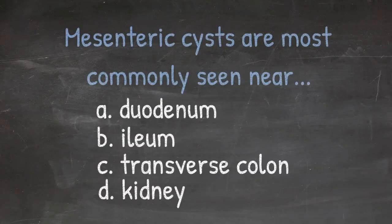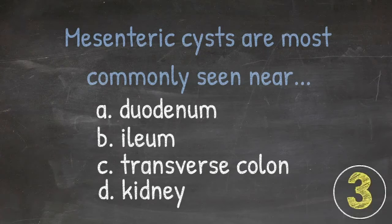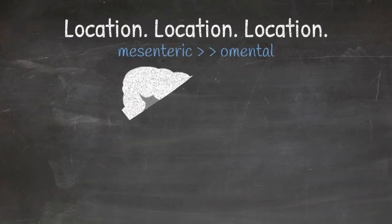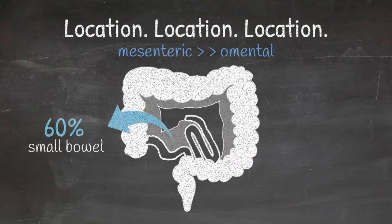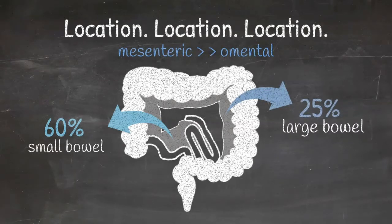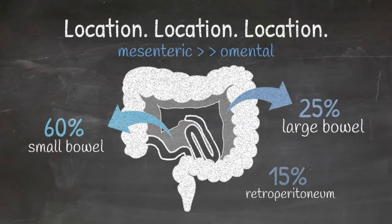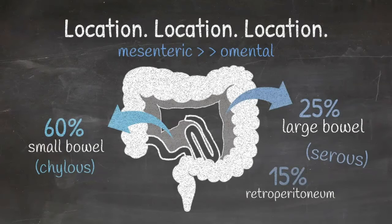Where will we find mesenteric and omental cysts? Mesenteric cysts are more common than omental cysts. About 60% of them are in the small bowel mesentery, about 25% are in the large bowel mesentery, and the remaining percentage are found in the retroperitoneum. The ones in the small bowel mesentery are more often chylous in nature, whereas the large bowel and retroperitoneal cysts may be more likely to be serous. You can have them anywhere from the duodenum all the way through to the rectum, but they're more common in the ileal mesentery.